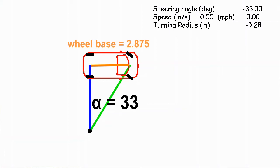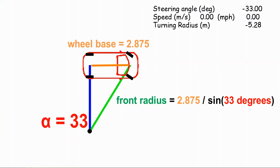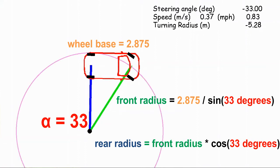The front axle, the front middle tire, is always going to be traveling on the radius of this green line. And the rear axle tire will always be traveling on the radius of this blue line. Since we know the length between the wheelbase, here it's 2.875 meters, the green line is going to be 2.875 meters divided by the sine of our steering angle, in this case 33 degrees. That gives us this 5.28 meter steering radius. And the blue line is going to be the green line times the cosine of that angle.